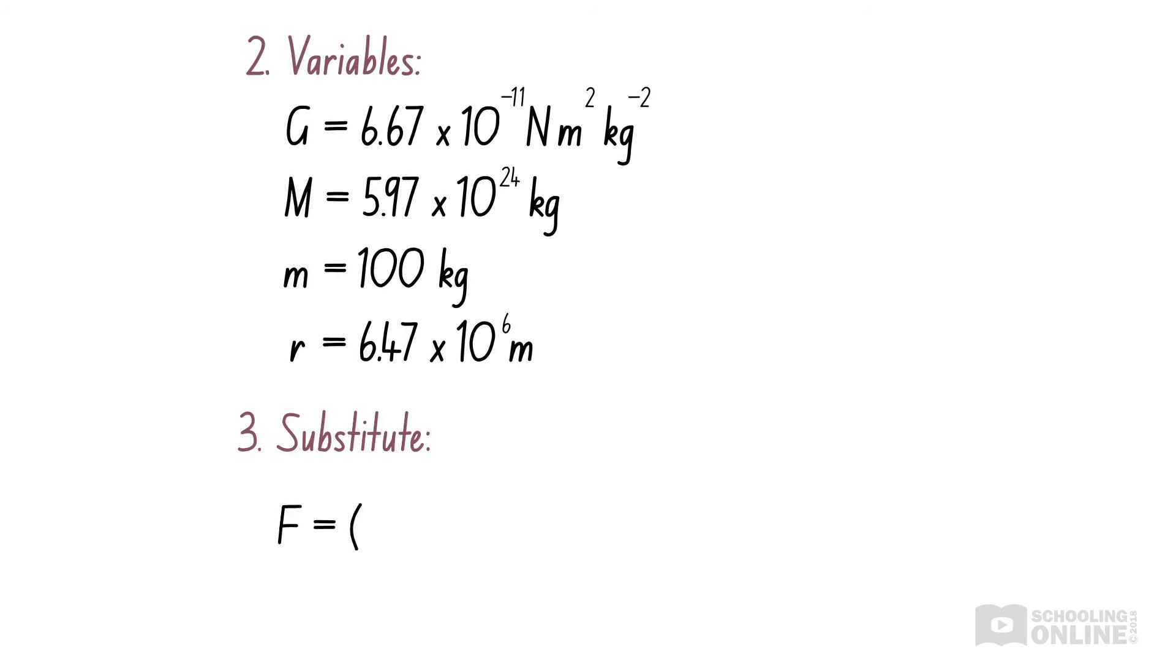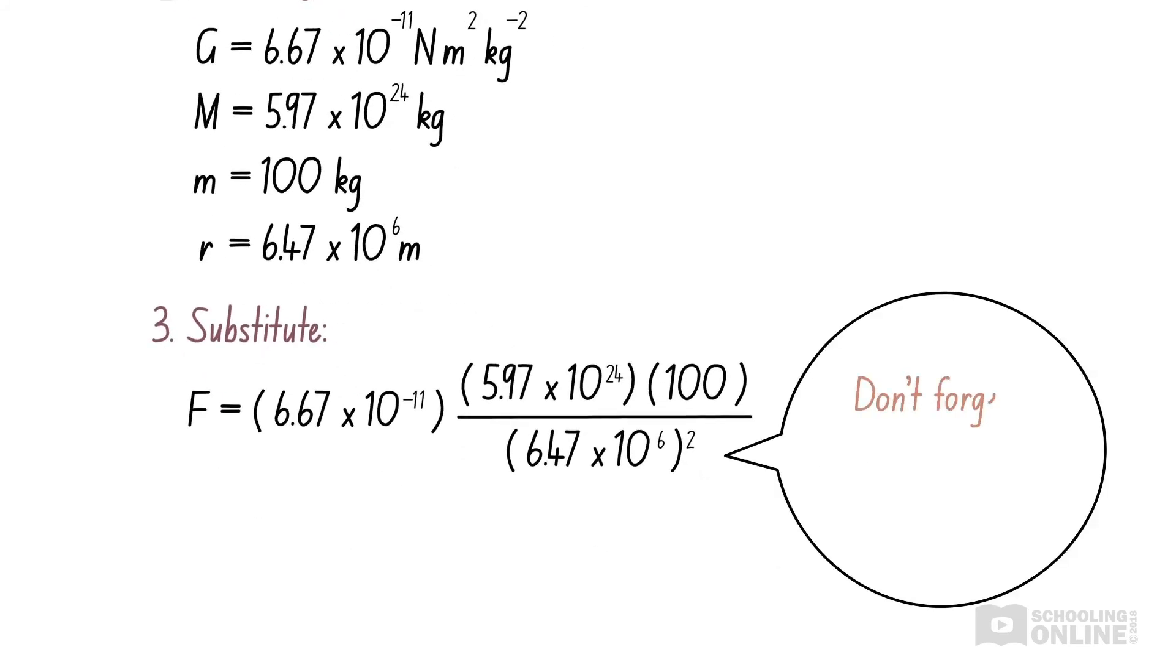Next, we substitute the values into the equation. When putting this into your calculator, don't forget to square the denominator. Now we arrive at our unrounded value for the gravitational force, F, in units of Newtons.